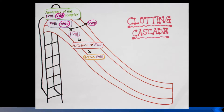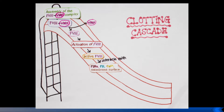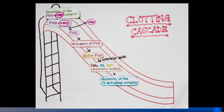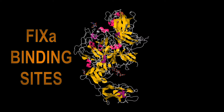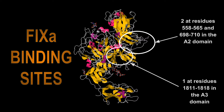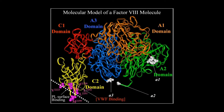This active Factor VIII interacts with Factor IXA, which activates Factor X by forming the Factor X activating complex. There are three Factor IX interactive binding sites within Factor VIII. This activated complex then binds to activated platelets at the injury site. The C2 domain binds to the phosphatidylserine head groups of activated platelet membrane surfaces.